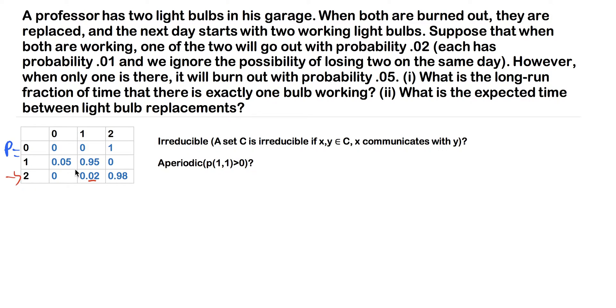Note that it says we ignore the possibility of losing two on the same day, so we have zero probability of losing both of them. And now, since this row needs to add to one, the probability of none of them going out is 98%. So that's how we get 0.98, because 0.98 plus 0.02 equals one.